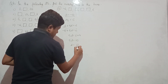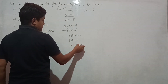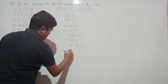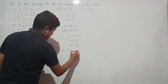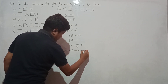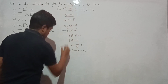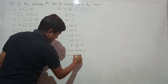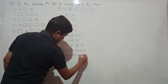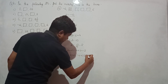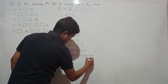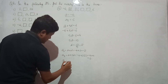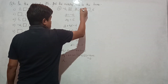Common difference is 2. Second term is first term plus d: minus 4 plus 2 equals minus 2. Third term is a plus 2d: minus 4 plus 4 equals 0. Fourth term is 0 plus 2 equals 2.